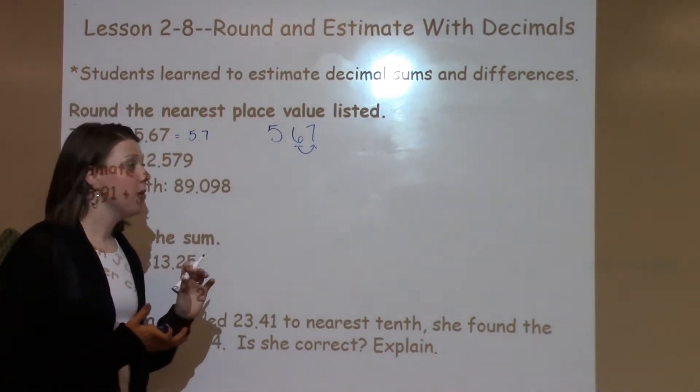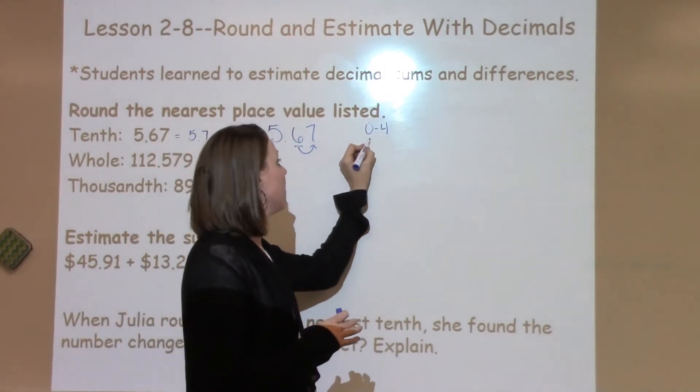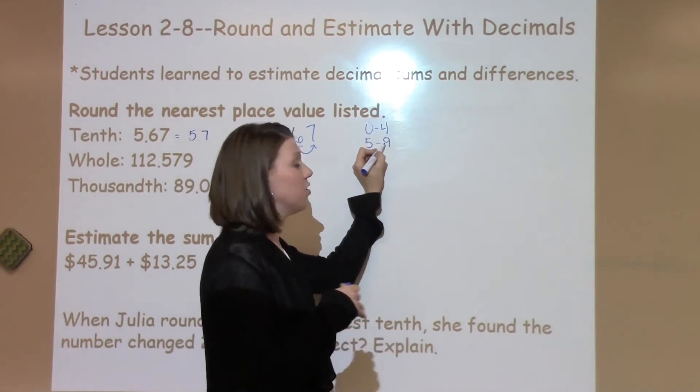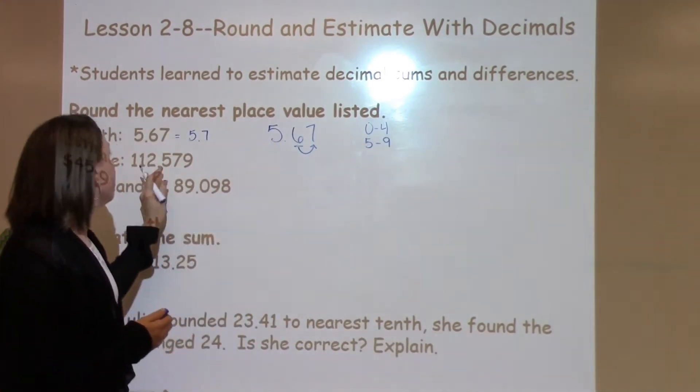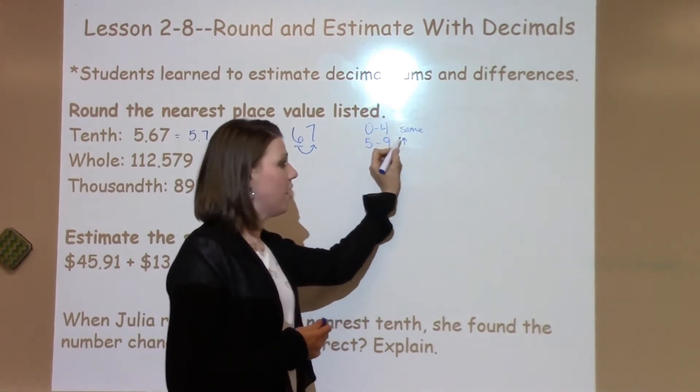A key that students can remember is 0 through 4 stays at the floor, so it's not going to change, and then 5 through 9 is going to change the number to one more. So looking at this, I'm going to write down stays the same and rounds up.